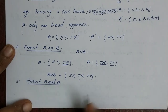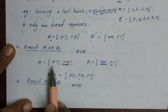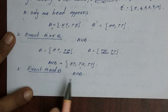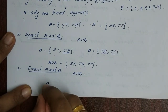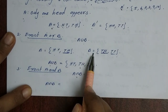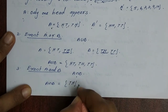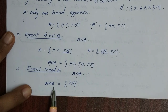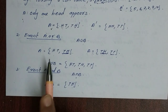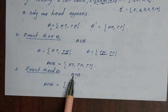Next is event A and B — that is, A intersection B. The intersection contains common elements. If A and B share common elements, A intersection B gives those common elements. For example, TH is common — so A intersection B equals {TH}. We use both union and intersection.